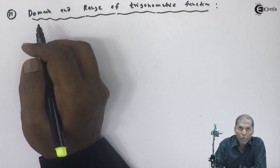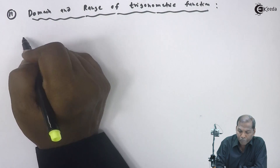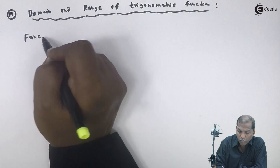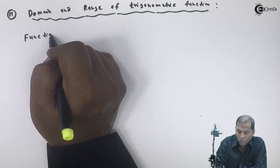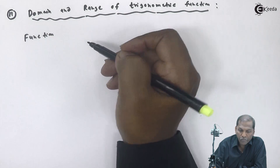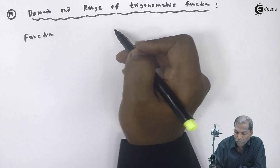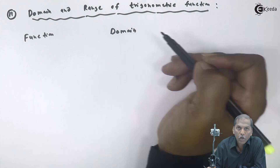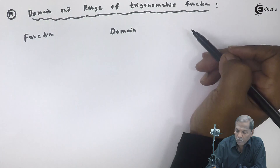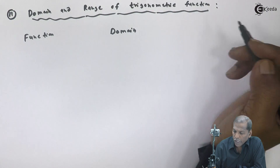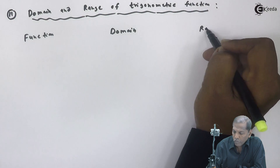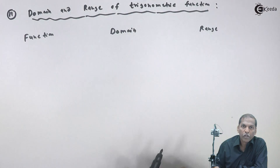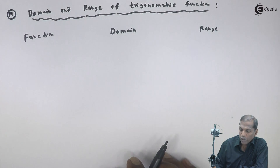So here we create a chart. The first column is Function, the second column is Domain, and the third column is Range.